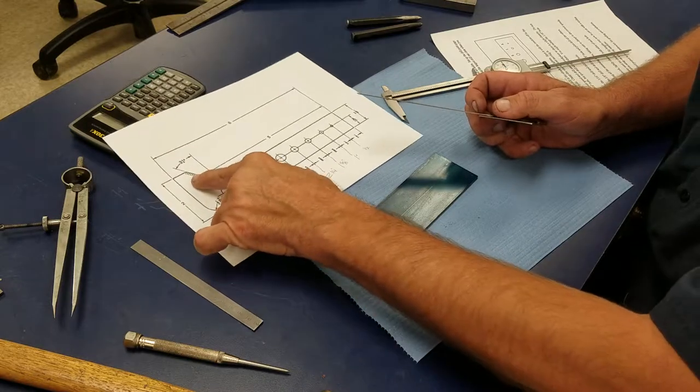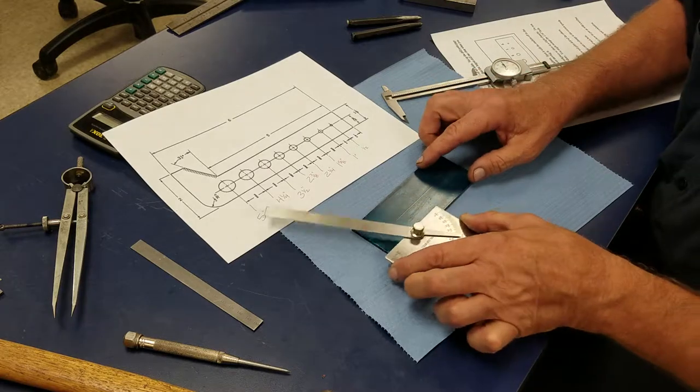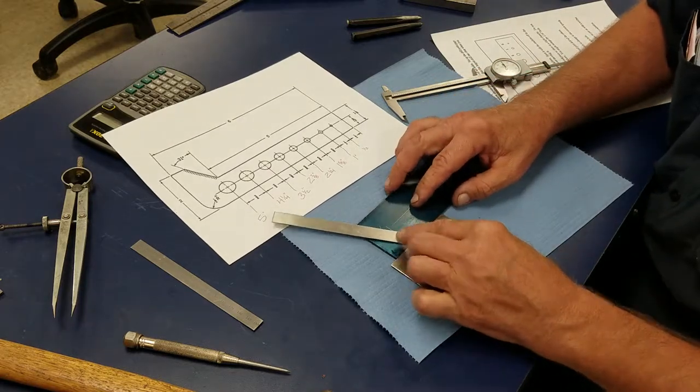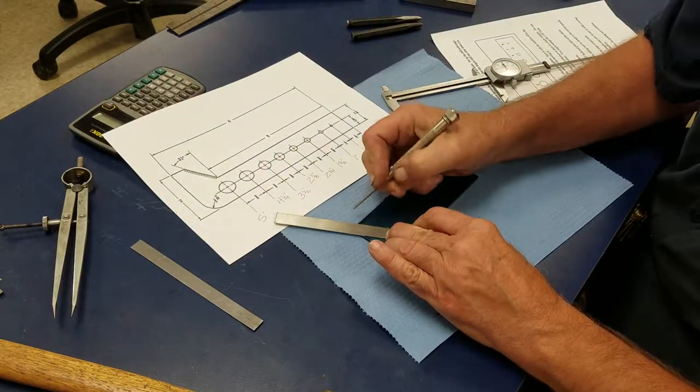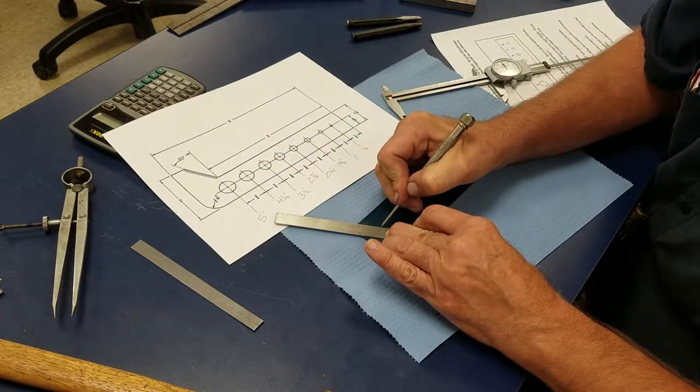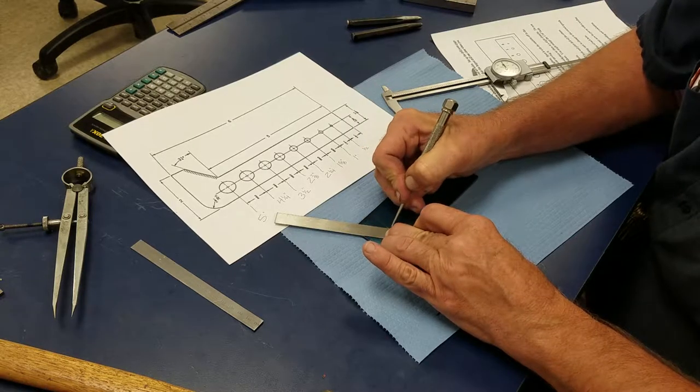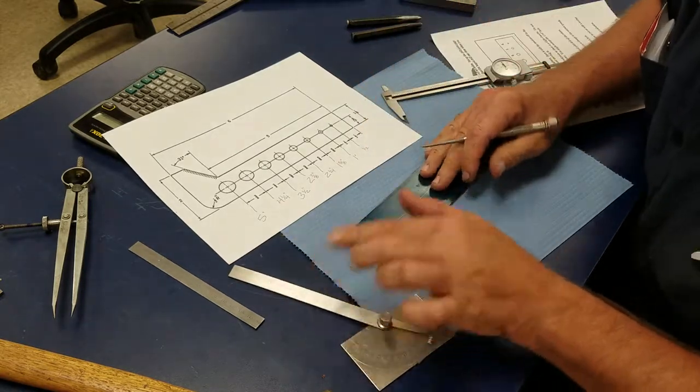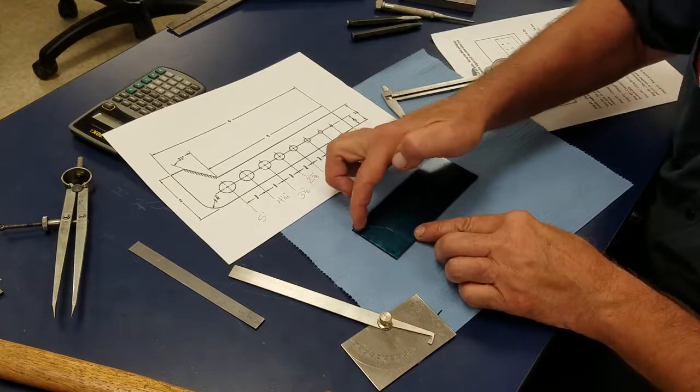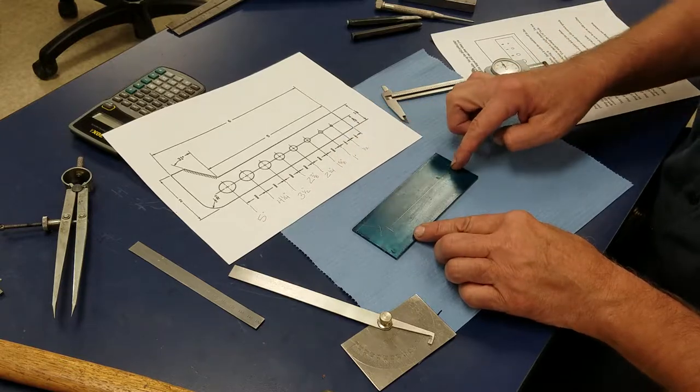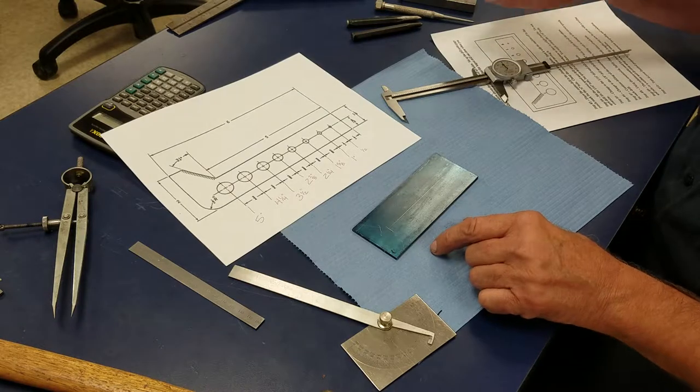My angle's 31 degrees, but 31 from 90 is going to be 59. So I set my protractor at 59 degrees. I'm going to come off this land here and run it down just like this. You can see that land there. Now I have my line here, my two inch line, my other line. I do need to make a spot for my radius.